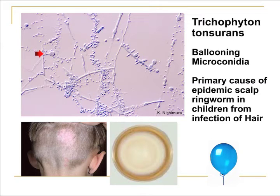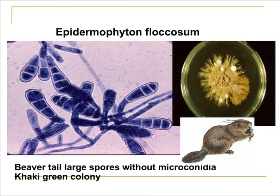Trichophyton tonsurans has very subtle lactophenol cotton blue appearance with ballooning microconidia — that is about all you get. The colony is white, grows in five to seven days, and the reverse is beige-ish white. This is the primary cause of epidemic scalp ringworm in children, spread by sharing towels, combs, or brushes. Epidermophyton floccosum is known for producing beaver tail-shaped macroconidia — it only produces macroconidia and no microconidia. The colony is khaki green in color.